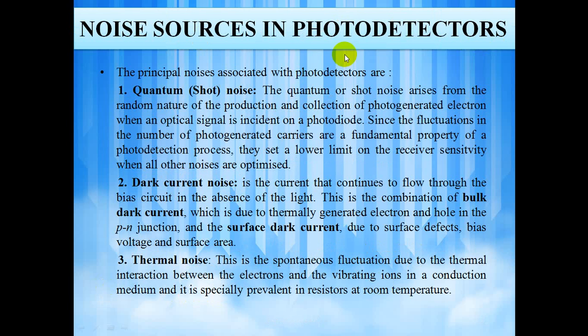The types of the noise source in PIN photodetectors are quantum noise, dark current noise and thermal noise. Quantum noise or shot noise arises from the random nature of the production and collection of photo-generated electrons when an optical signal is incident on a photodiode. Since the fluctuations in the number of photo-generated carriers are a fundamental property of a photodetection process, they set a lower limit on the receiver's sensitivity when all other noises are optimized. Dark current noise is the current that continues to flow through the bias circuit in the absence of light. This is the combination of the bulk dark current which is due to the thermally generated electron and hole in the PN junction, the surface dark current due to surface defects, bias voltage and surface area.